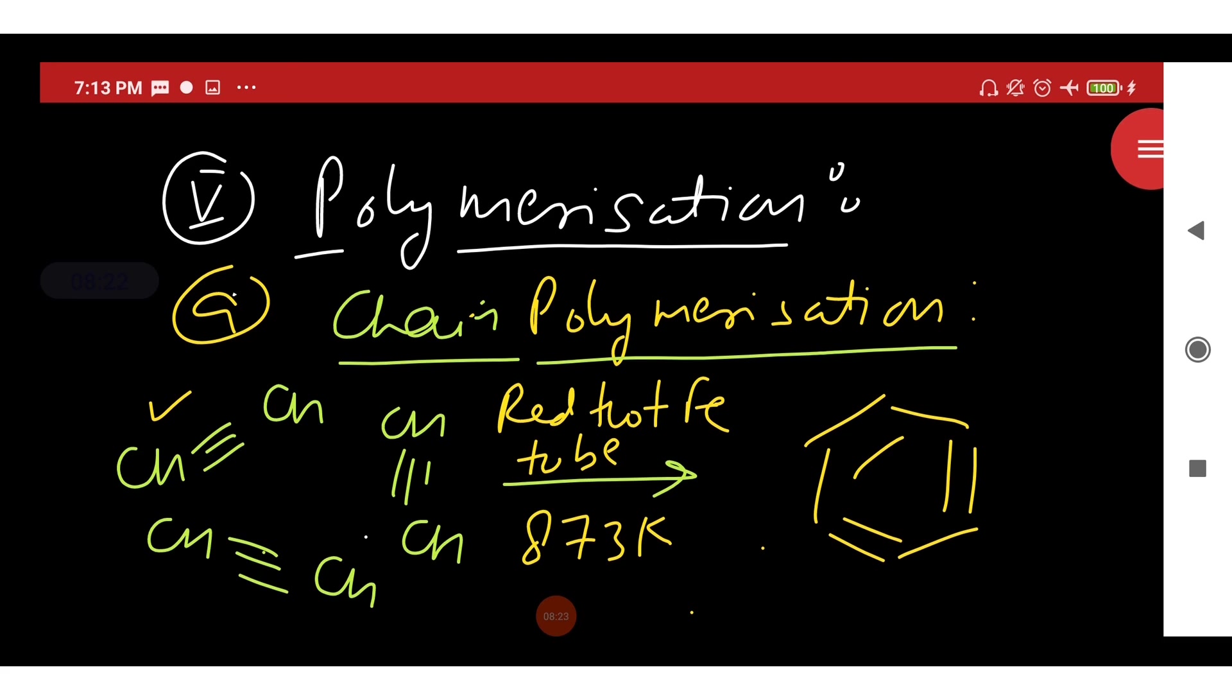Next is chain polymerization. Ethyne on passing through red hot iron tube at 873 Kelvin temperature, cyclic polymerization takes place and 3 molecules of ethyne polymerize to form benzene.